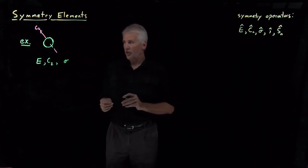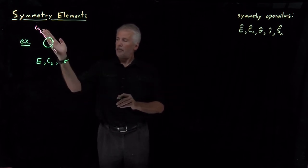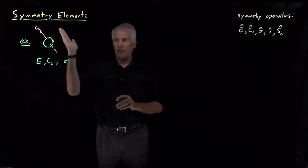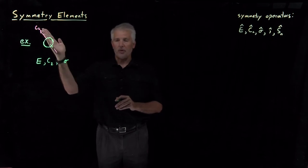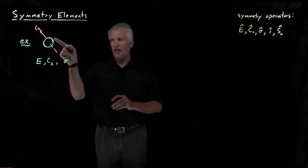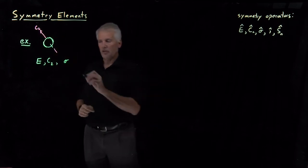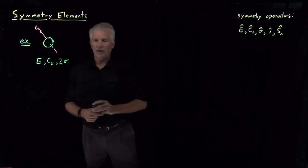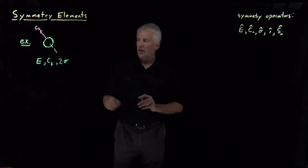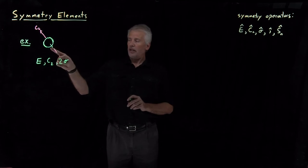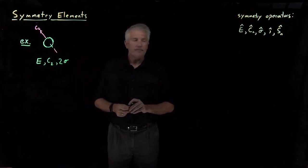There's also a sigma plane that contains the C2 axis. If I have a plane perpendicular to the board that contains this C2 axis, the top right and the bottom left are mirror images of one another.